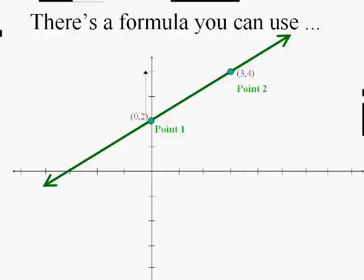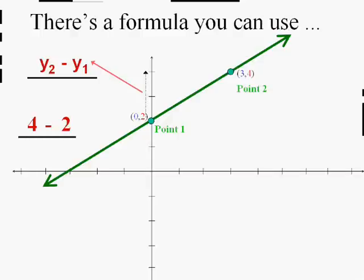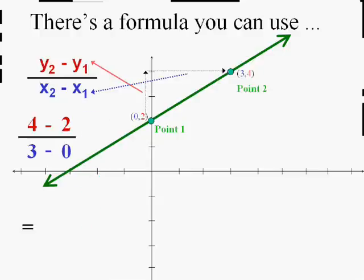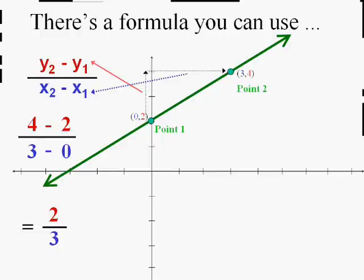The rise, or the amount we went up, we know is two. Where did that two come from? Well, it came from the y part of the second point minus the y part of the first point — in this case, four minus two. And the run, the amount you went over — couldn't you say that was the x part of the second point minus the x part of the first point? In this case, three minus zero. We get four minus two is two, and three minus zero is three, and that, in fact, is the slope — up two and over three.